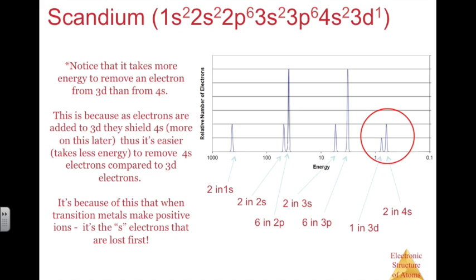It is because of this that makes metals form positive ions — it's the S electrons that are lost first. So for a transition metal ion, we actually pull electrons out of the S sublevel before the D sublevel.